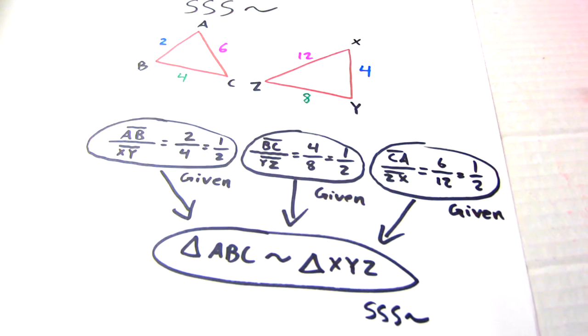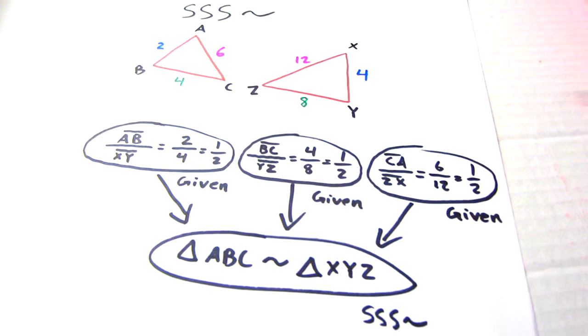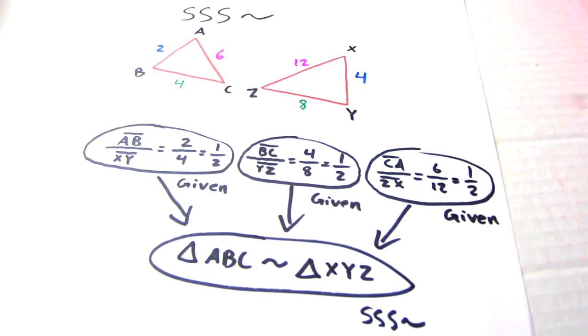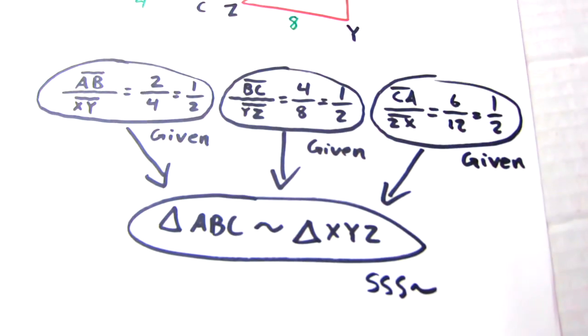When you do it the same way—small divided by small, medium divided by medium, large divided by large—you'll notice that all the ratios are the same: one half. This allows you to go ahead and say that the two triangles are similar by side side side similarity.